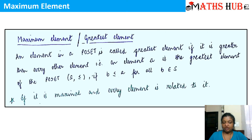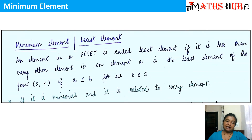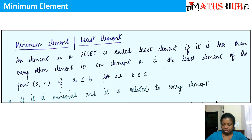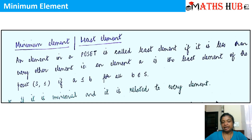Now let us come to the definition of the minimum element. A minimum element is also called the least element. An element in a poset is called the least element or the minimum element if it is less than every other element. That is, an element A is the least element of the poset S with less-than-or-equal-to partial order, if A ≤ B for all B belonging to S. So if you find any element which is lesser than every other element in the poset, that element will be declared as the minimum element. And if you can spot any element which is bigger than every element of the poset, that element will be declared as the maximum element.